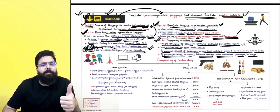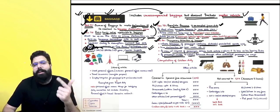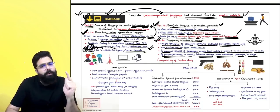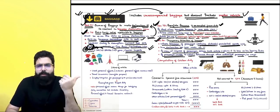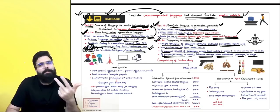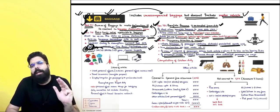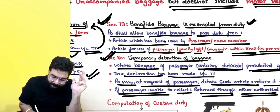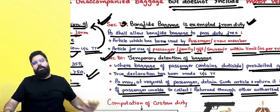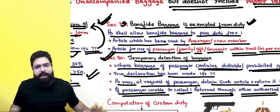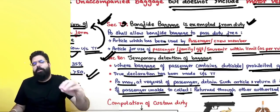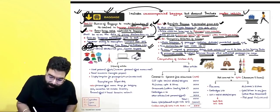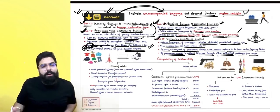Quick recap: Section 77 requires a true declaration to be made. Section 78 states the rate of duty and tariff value applicable is as of the date the Baggage Declaration Form is filed. Section 79 says bona fide baggage shall be exempted from duty. Section 80 covers temporary detention of baggage for dutiable or prohibited goods for which a true declaration has been made.